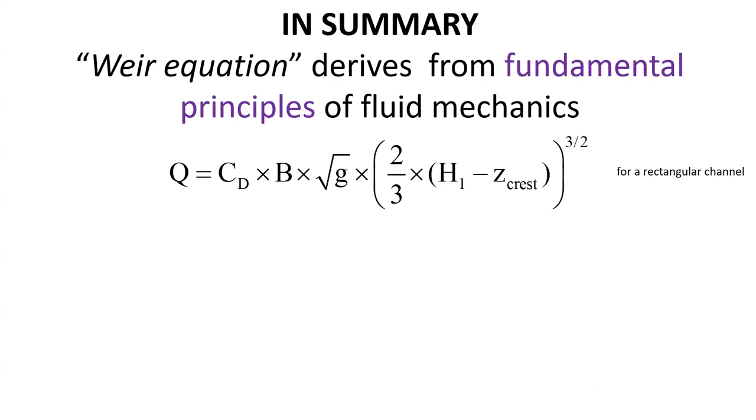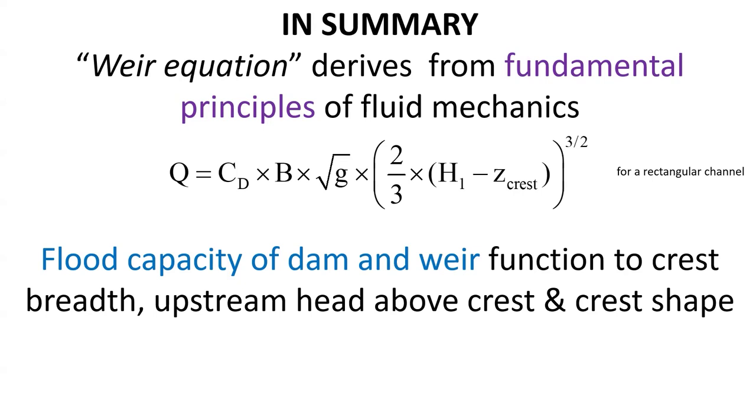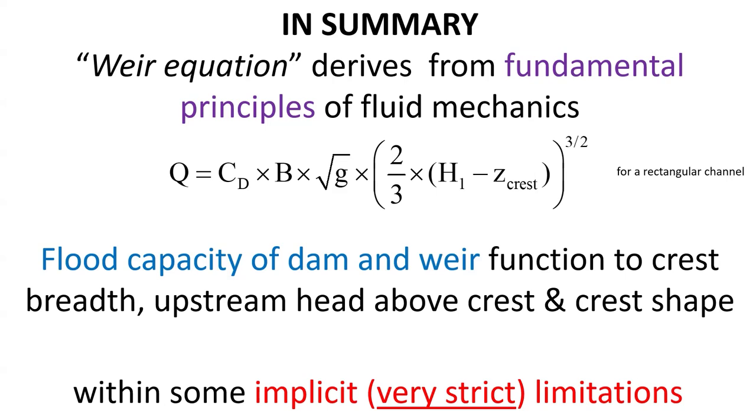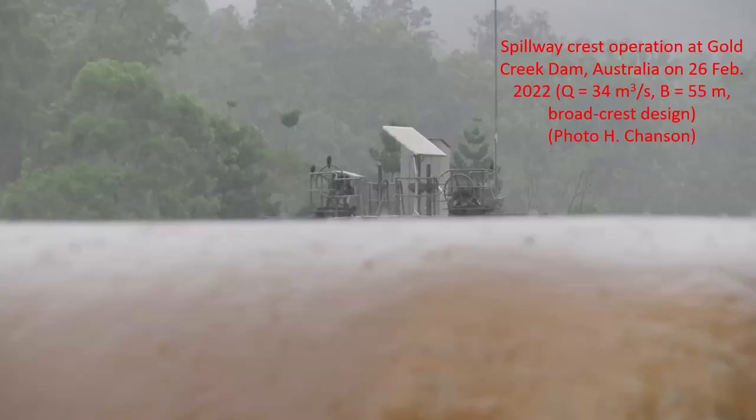In summary, the weir equation links the volumetric discharge to the upstream reservoir elevation and the weir geometry. It derives from fundamental principles of fluid mechanics and shows that the discharge capacity of a dam and weir is a function of the crest breadth, upstream head above crest, and crest shape. Yet, we should never forget that this equation is derived within some very strict assumptions.